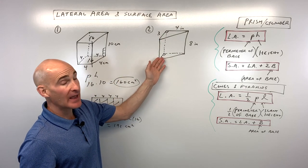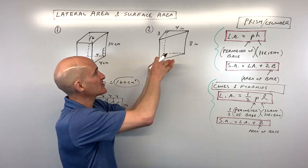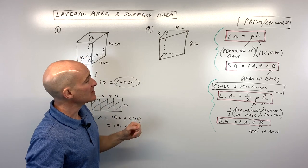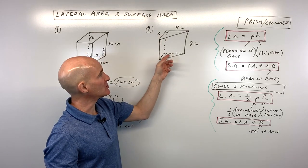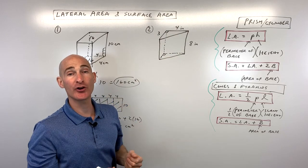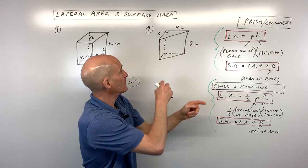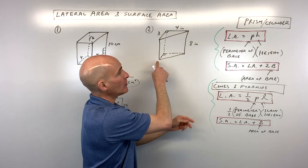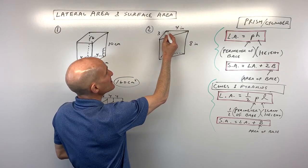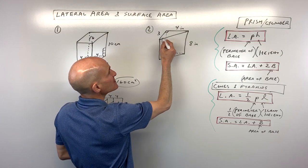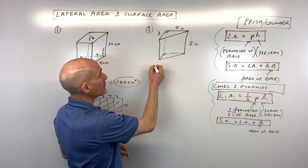This shape is a triangular prism — the top and bottom are triangles separated by a height of eight. With prisms, you have two parallel congruent bases. To find the lateral area, we need the perimeter of the triangular base times the height. We know two sides are three and four, so we use the Pythagorean theorem to find the third side.